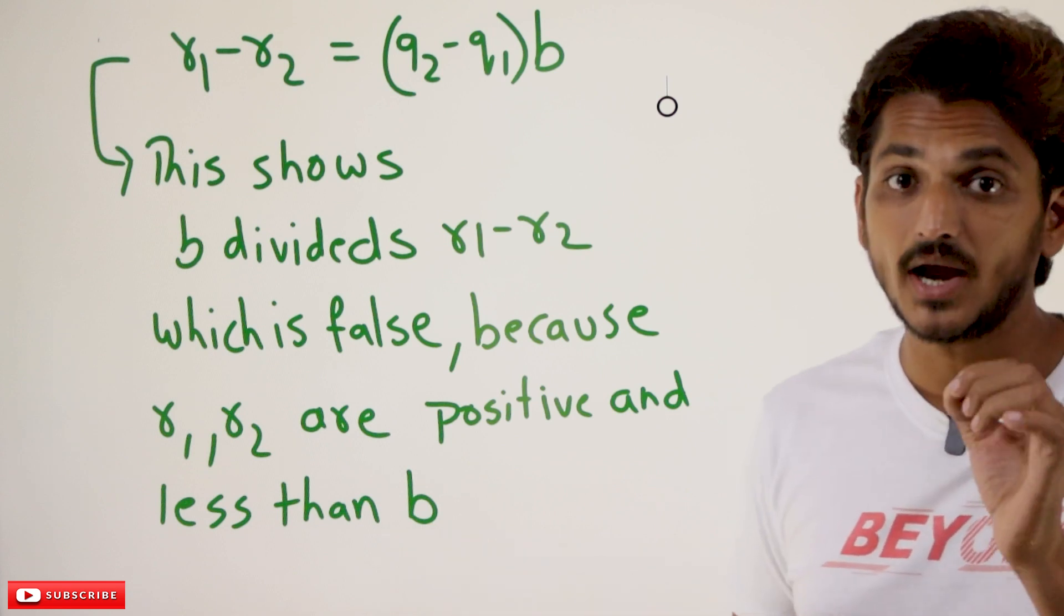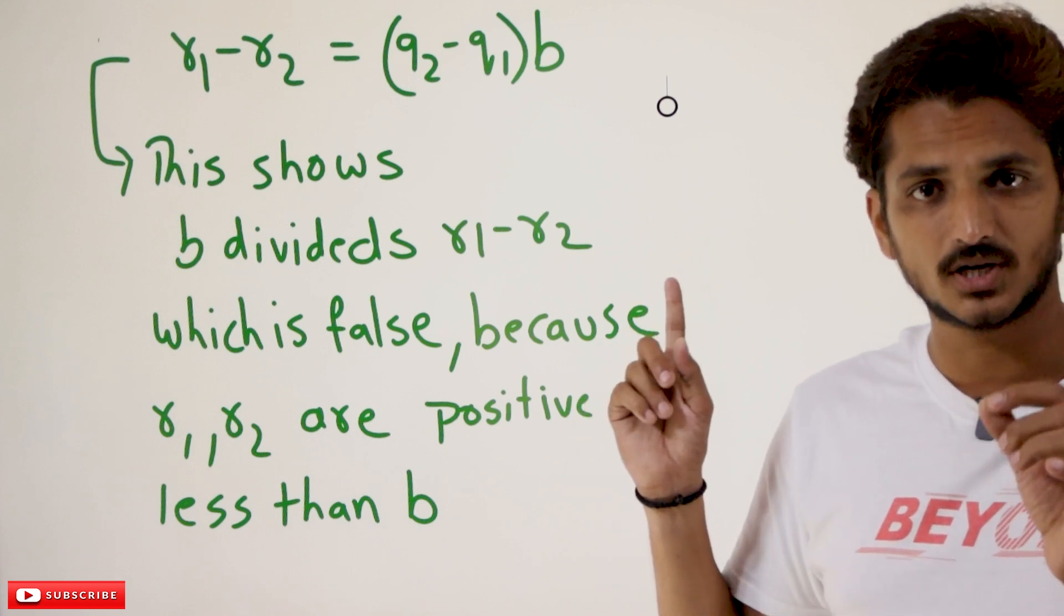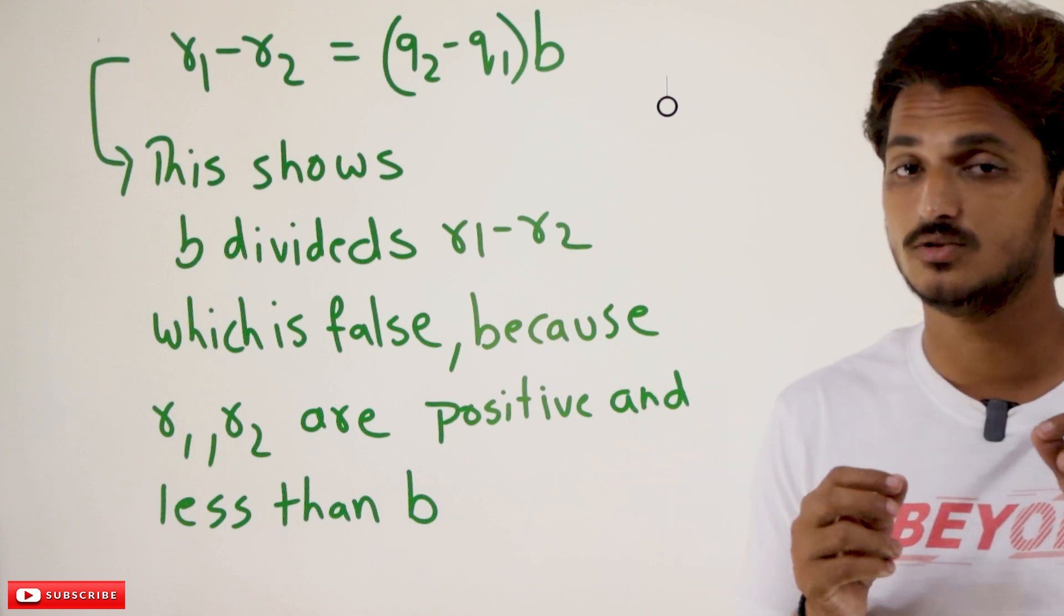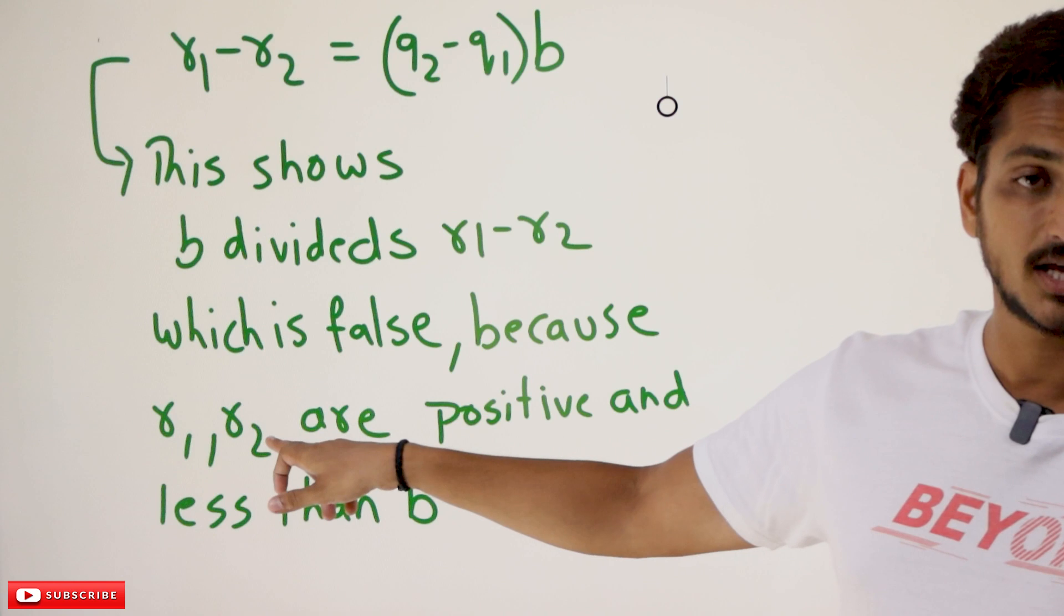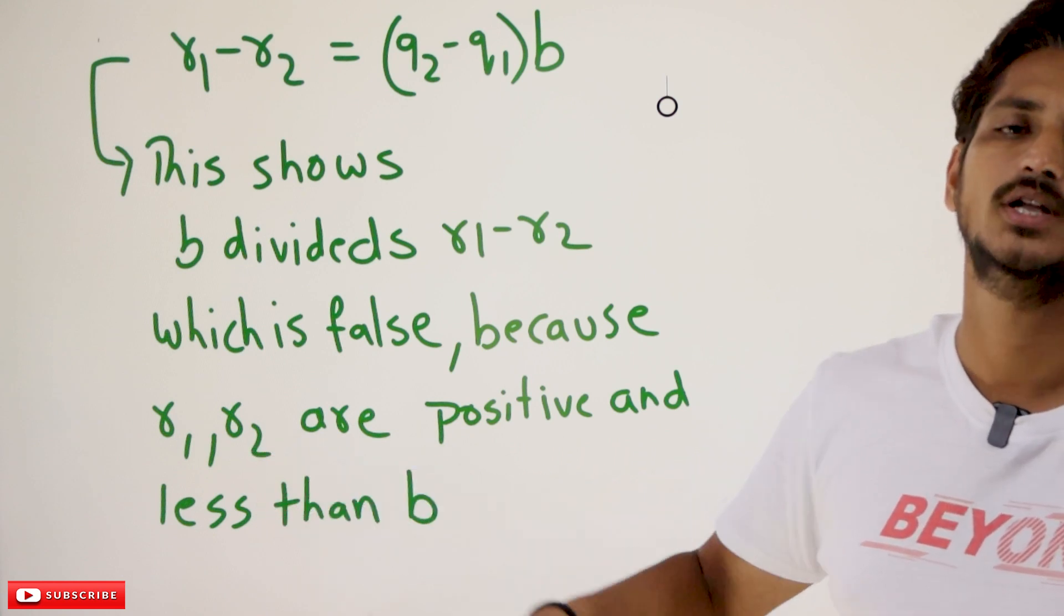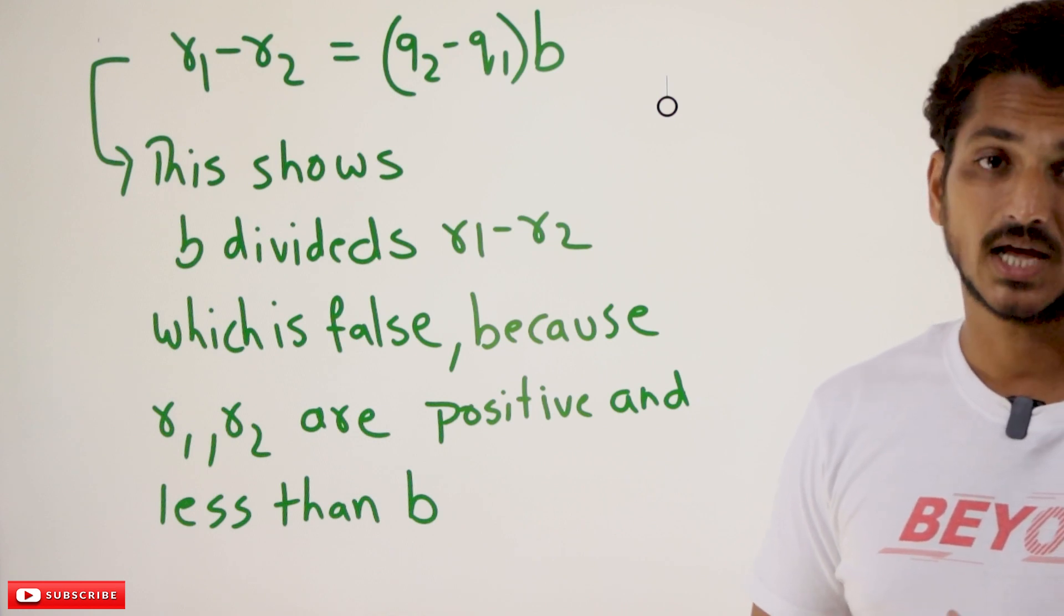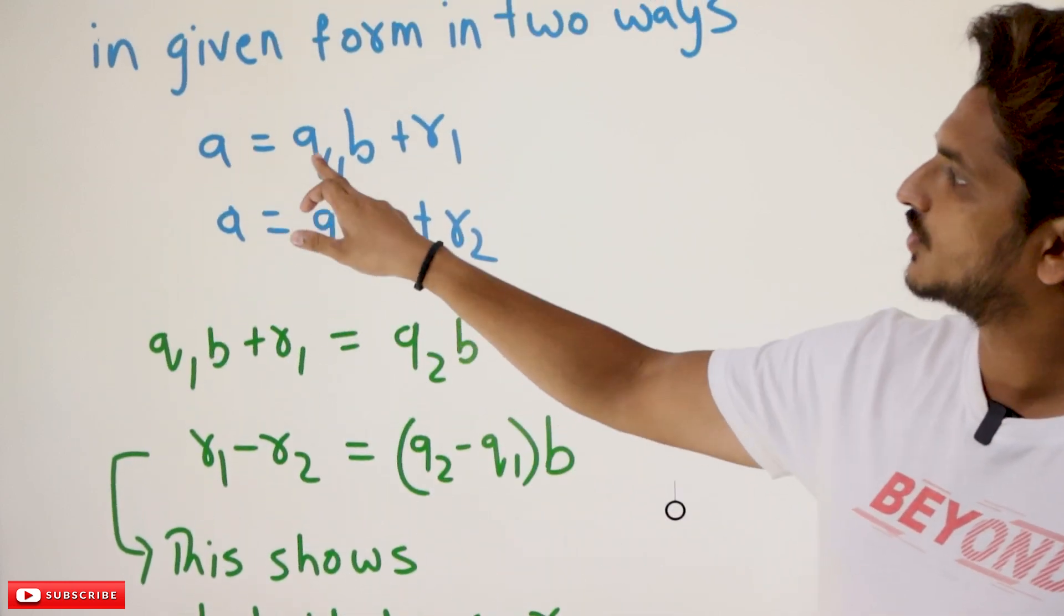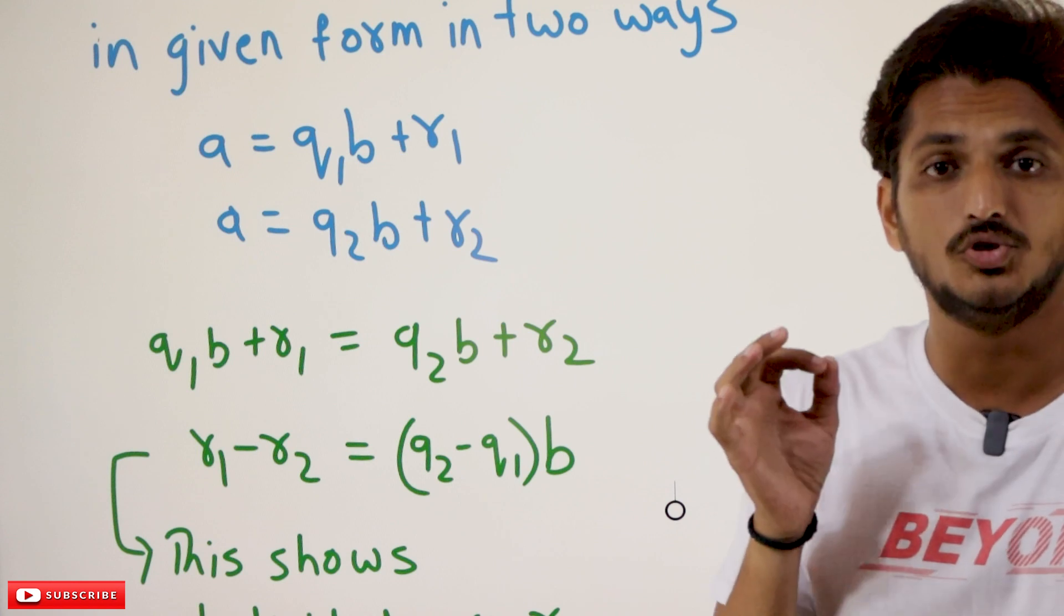Because they are the remainder values. From the above, we already showed that R1 is a remainder value, R2 is a remainder value. Remainder values are always less than B. Two positive integers that are less than B, if you subtract them, can B divide that? No, it is not going to divide that. So that's why we are having unique values. Unique A equals QB plus R. You are going to get Q and R values as unique values.